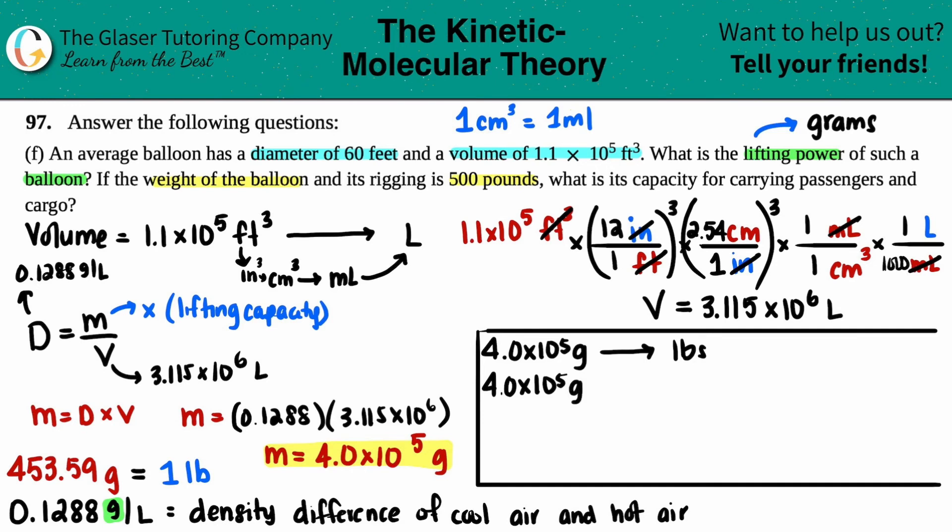4.0 × 10⁵ grams times the ratio - grams on the bottom, pounds on top. 453.59 grams equals 1 pound. Grams cancel out. Calculate: 4 × 10⁵ divided by 453.59. That gives a lifting power of 882 pounds.